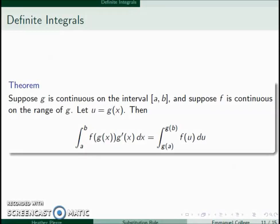So now let's talk about definite integrals. If we have a continuous function g on the interval from a to b and f is continuous on the range of g, and we say u is equal to g of x, then the integral from a to b of f of g of x g prime of x dx is the same thing as the integral from g of a to g of b of f of u du. So basically we'll do substitution the same way as we did before, but we'll have to change our bounds to be in relation to u rather than x.